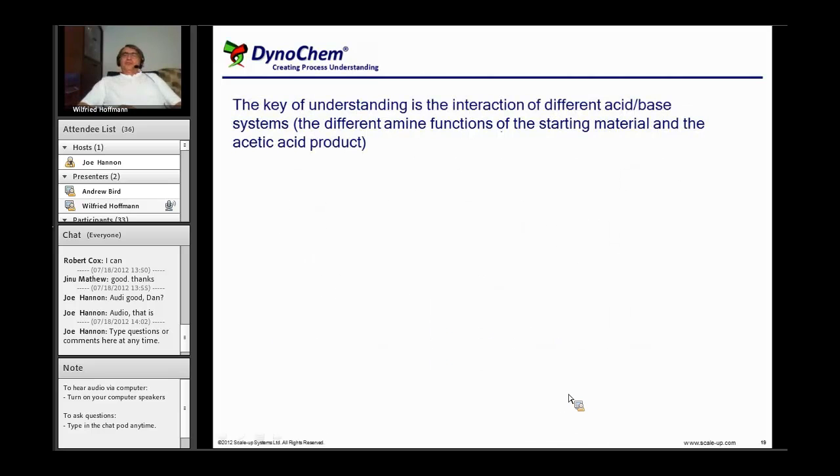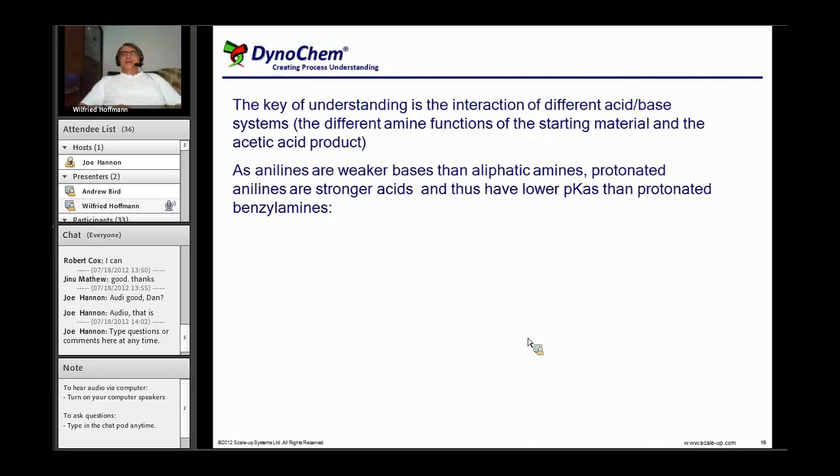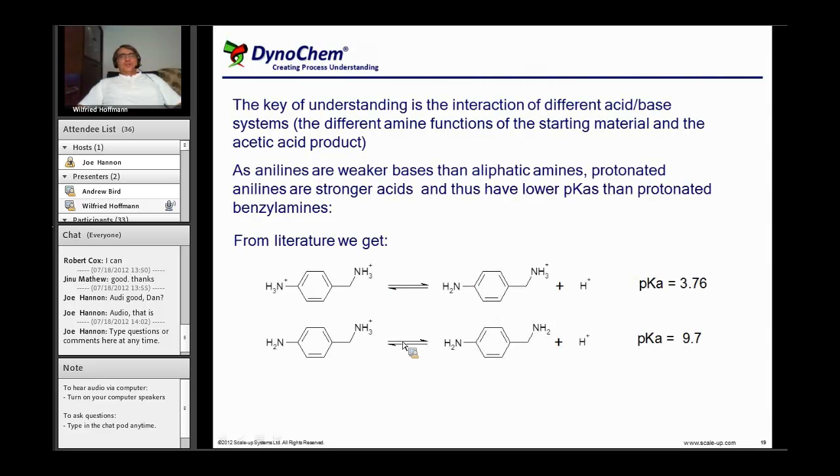First, the key to understanding is the interaction of different acid-base systems, because we have different amine functions and we also generate acid from the starting material acetic anhydride. We need to understand that the anilines are weaker bases than aliphatic amines, or the other way around, the protonated anilines are stronger acids and thus have lower pKa than the protonated benzylamines. From literature we get the numerical data: releasing this proton from the aniline has a pKa of 3.7, and for releasing the benzylamine proton that equilibrium has a pKa of 9.7, so we have about six pKa units difference.